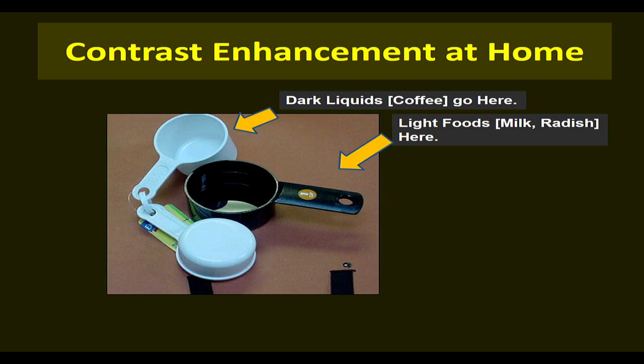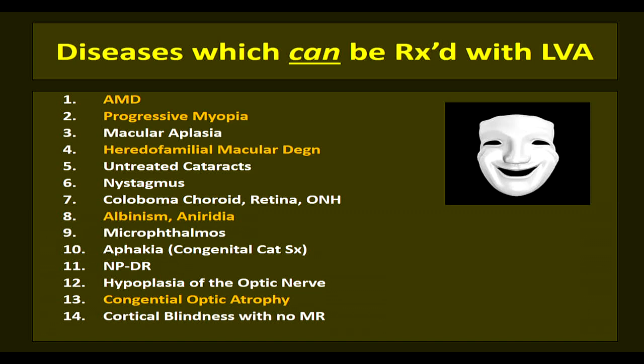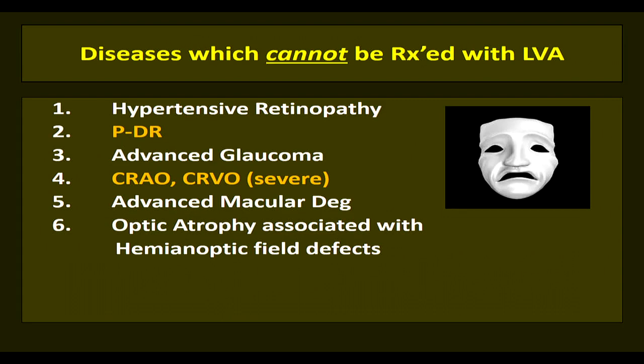Use contrast in utensils and contrast borders to mark edges of doors and windows. Contrasting cloth or paper tape on the wall will help the patient see well from a distance and help prevent accidents. Doorknobs, handles, and light switches in contrasting colors to the door or wall are helpful. Avoid multicolored or patterned tablecloths — use single solid colored cloth. These are diseases treated by low vision aids: AMD, progressive myopia, retinitis pigmentosa, macular degeneration, and many more. Low vision aids are not generally helpful in hypertensive retinopathy, PDR, advanced glaucoma, CRAO, or hemianopic field defects.